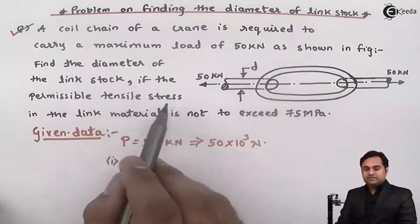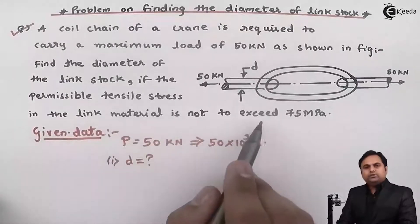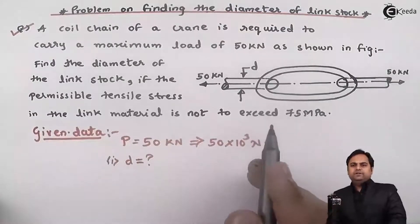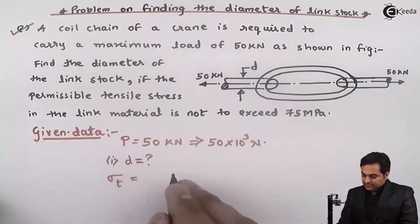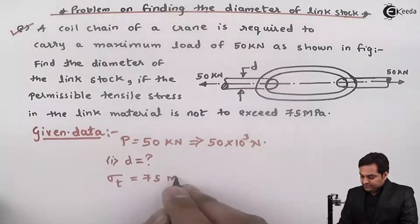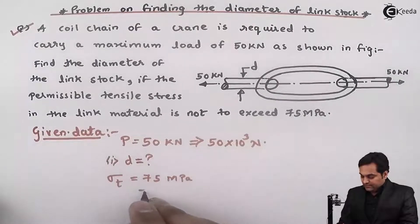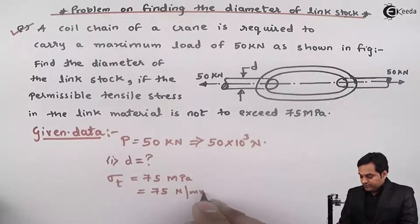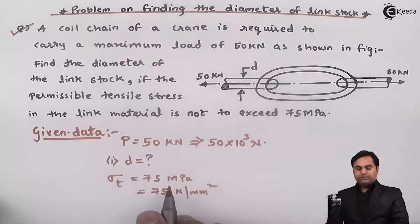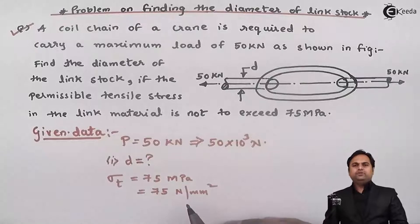If the permissible tensile stress in the link material is not to exceed 75 mega Pascal, permissible tensile stress is sigma t and that is equal to 75 mega Pascal, and mega Pascal is directly converted into newton per mm square because one mega Pascal is one newton per mm square.